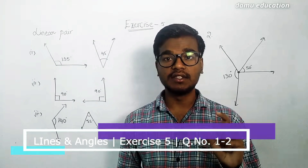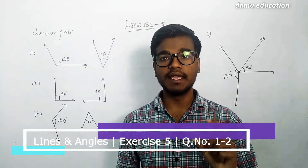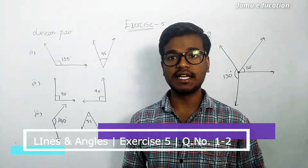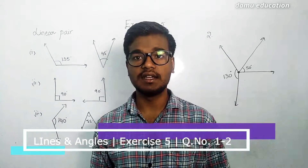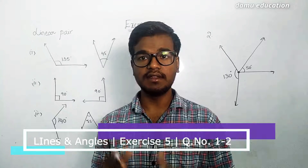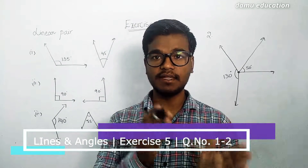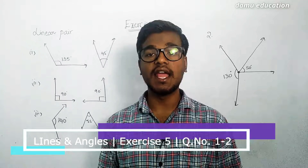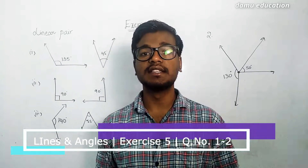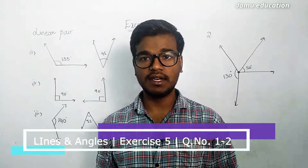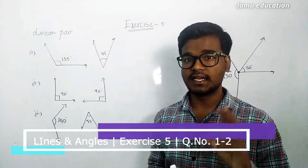For linear pair angles, the two angles must be adjacent. So after framing the two angles as adjacent, if their sum is equal to 180 degrees, then we can call them a linear pair. Now our first question gives us two angles that we need to frame as adjacent angles.